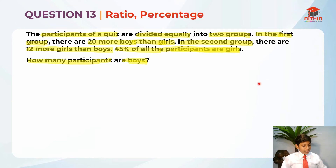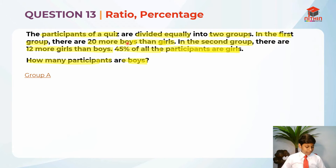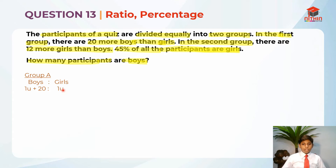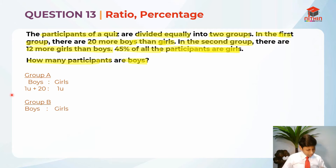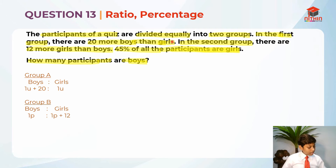Now that we've read the question, we should write down the ratio first. For group A, they tell us there are 20 more boys than girls. So I put boys as 1u plus 20 and girls as 1u. For group B, I'm going to use 1p — one part — because it's not the same unit. Girls are 12 more than boys in the second group, so girls are 1p plus 12.